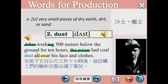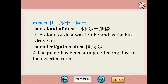All over是遍布的意思，常見搭配的片語有all over the world，就是遍及全球。關於dust有一個很棒的片語，是a cloud of dust，一陣塵土飛揚。例句說到：a cloud of dust was left behind as the bus drove off，當公車開走的時候，留下了一陣塵土飛揚在它後面。